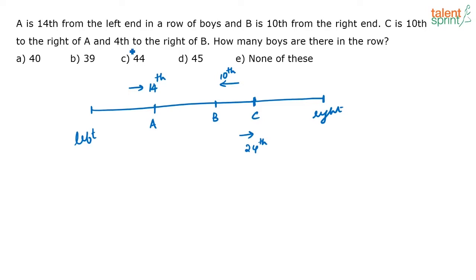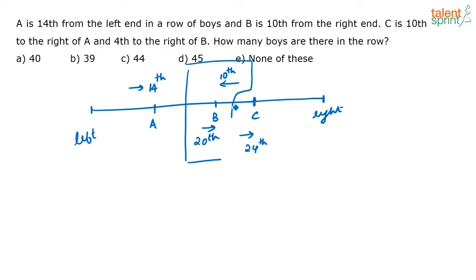The other information about C is that it is fourth to the right of B. C is fourth to the right of B, and C is 24th from the left end, so B's position from the left end has to be 20th. Now we have B's position from the left end (20th) and from the right end (10th). In any line, if you know a person's position from the left end and the right end, the total number of people is L plus R minus 1.